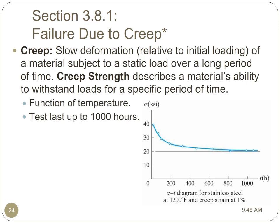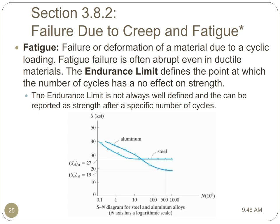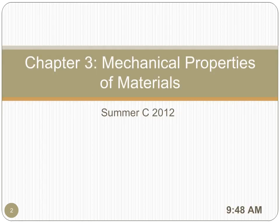Materials subject to a constant stress or strain will yield slowly over time. This is called creep. The creep strength is the strength of a material after a long period of time after it has been subject to a constant strain. Materials that are subject to a cyclical loading will fail at a much lower stress than under a constant load. This is called fatigue. The endurance limit describes the point at which the number of cycles has no effect on the strength of the material. Thank you for watching this review of the mechanical properties of materials. Next time, we'll investigate the deformation of materials subject to axial loads.